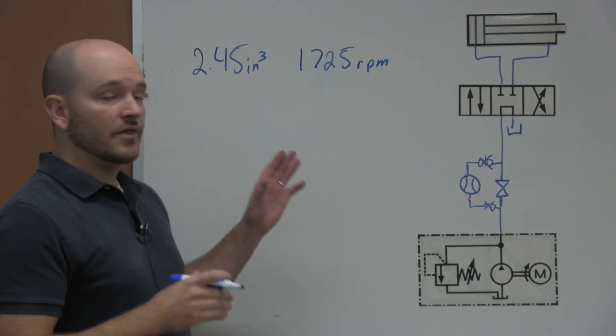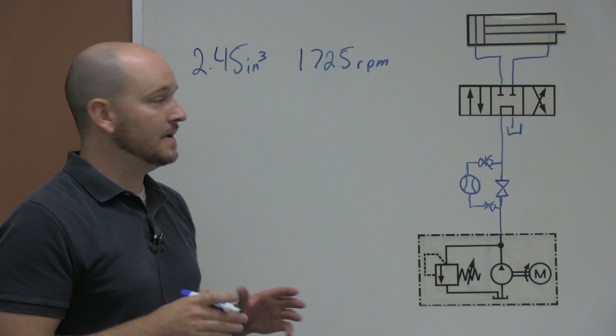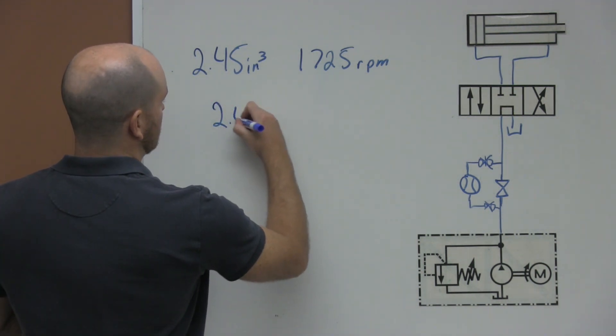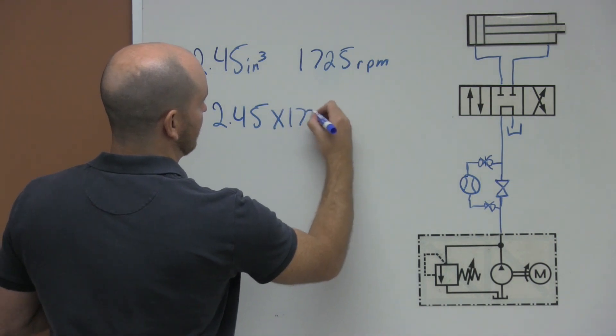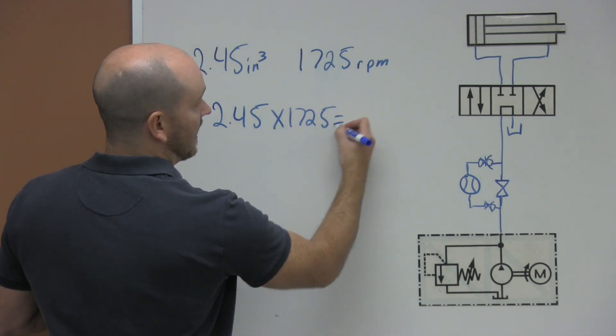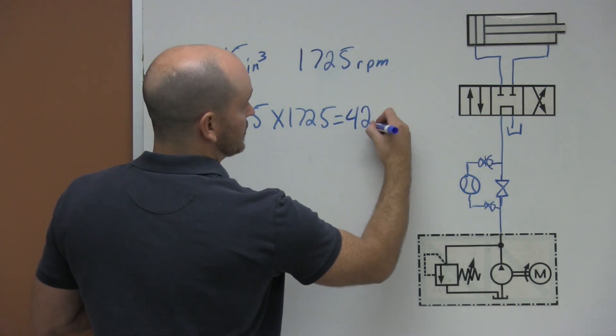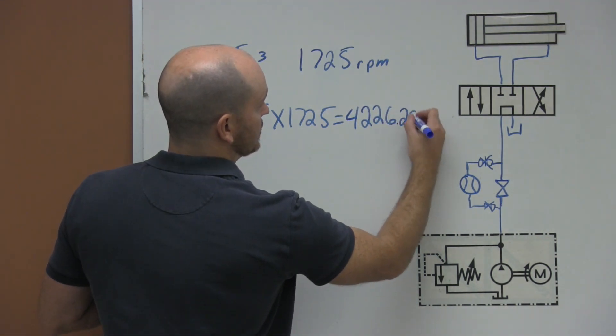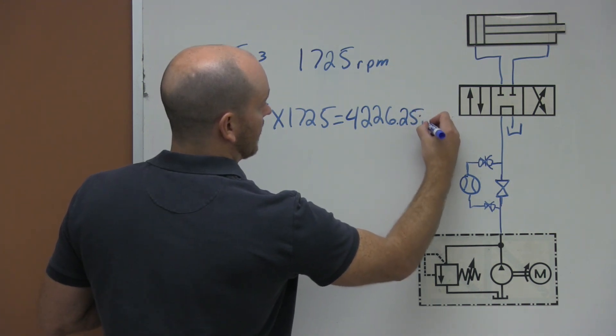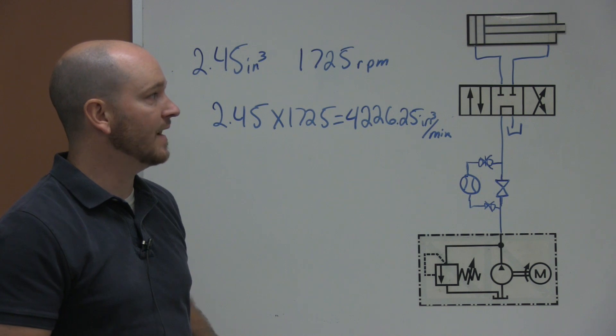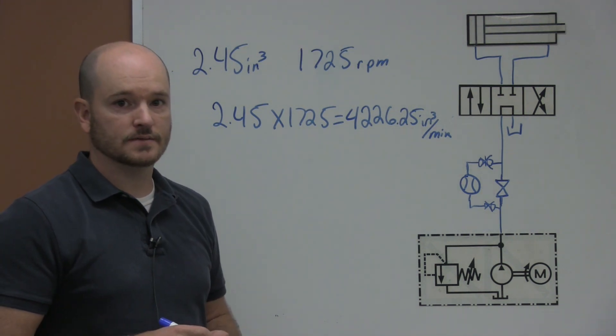Now the first step in getting the theoretical gallons per minute is to multiply these two. So we would take 2.45 times 1,725, and that would equal 4,226.25 cubic inches per minute.